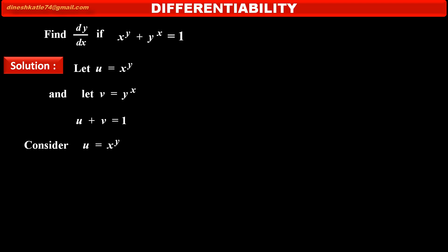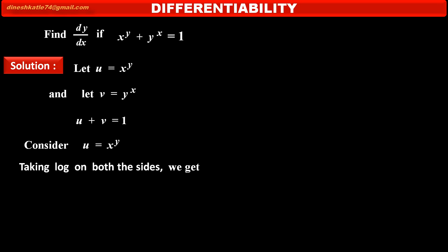Consider the first part: u is equal to x raised to y. To find the derivative of this first part, we make the function simpler by taking log on both sides. We get log of u is equal to log of x raised to y. By using the law of exponent of logarithm, the right hand side becomes y into log x.